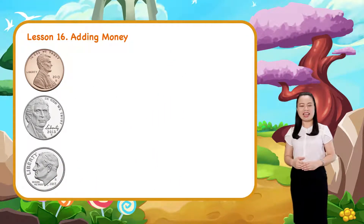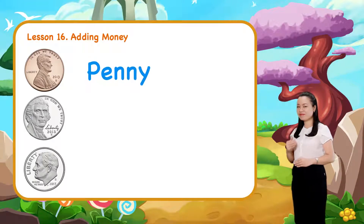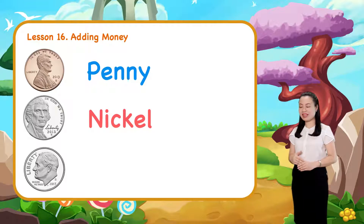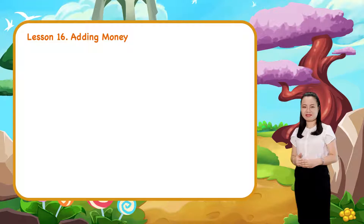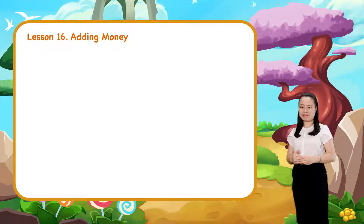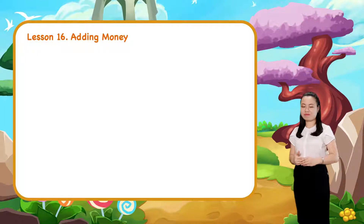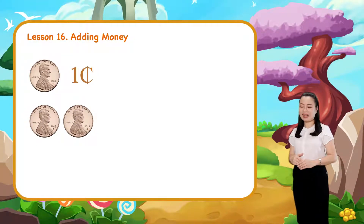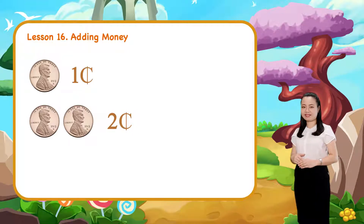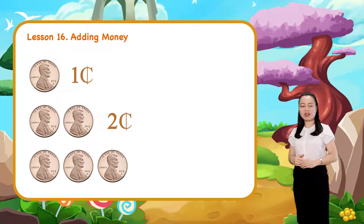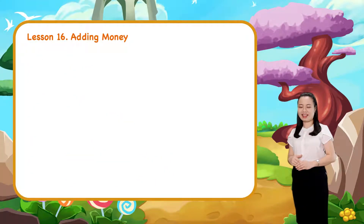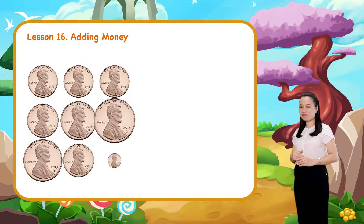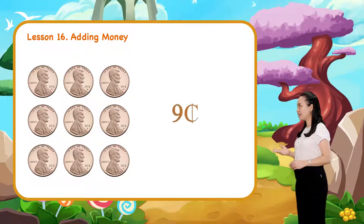So, now you know the penny, the nickel and the dime. Let's learn to add money. If we have one penny, then we have one cent. If we have two pennies, then we have two cents. If we have three pennies, then we have three cents. If we have nine pennies, then we have nine cents.